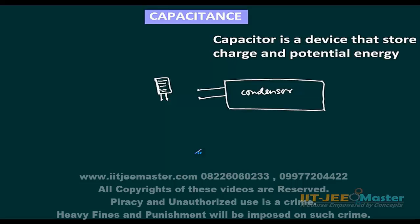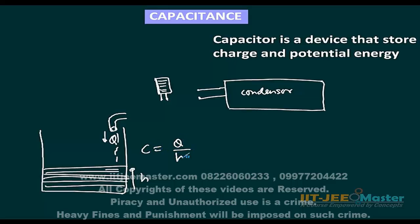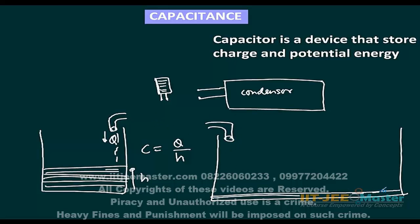For an isolated conductor, how is the capacitance defined? Consider a vessel in which we fill water or a liquid. As you fill the quantity of water Q, the liquid level rises. The capacitance will be Q divided by height H. If H is less — which happens for a vessel whose surface area is more — and you fill the same amount, then H will be less, meaning its capacitance is more.